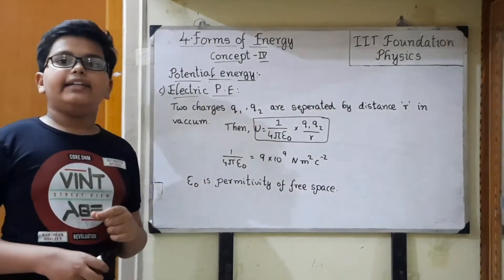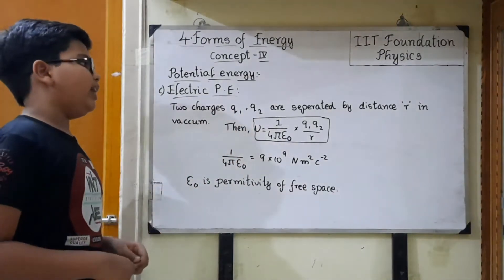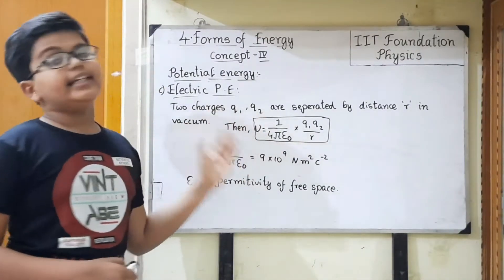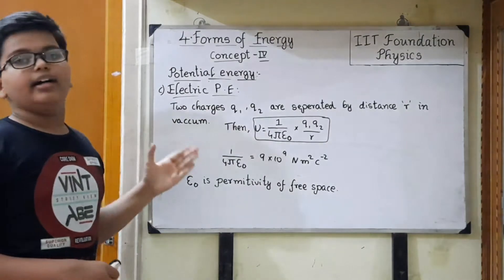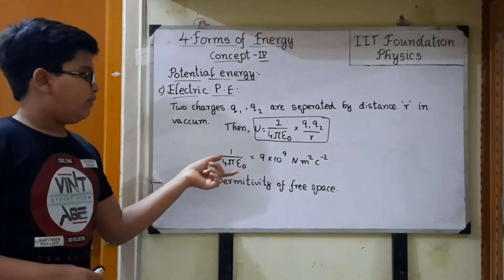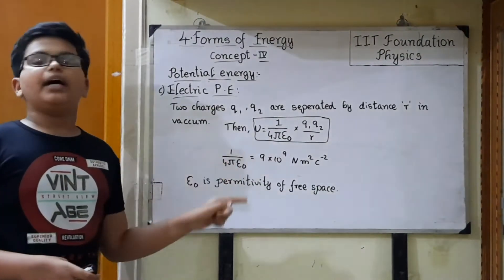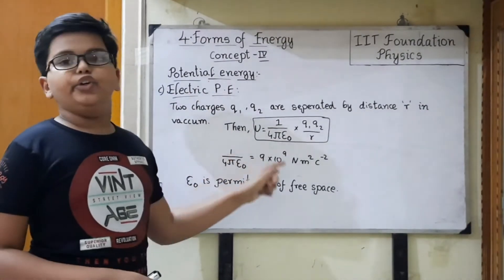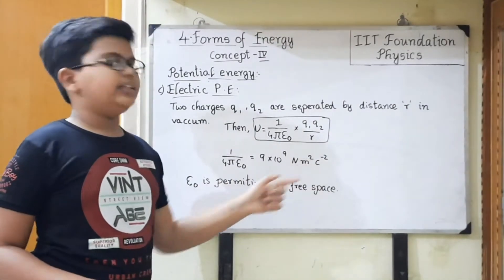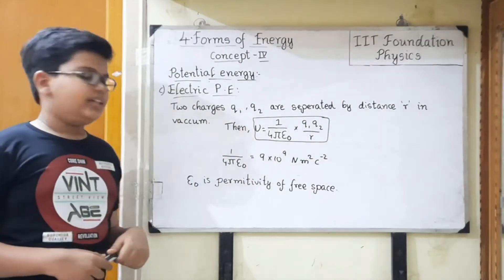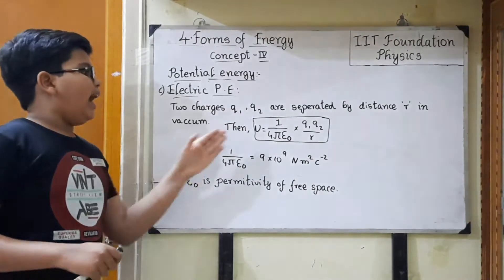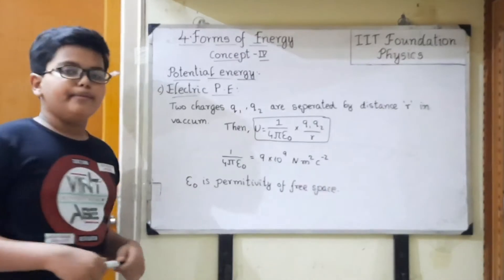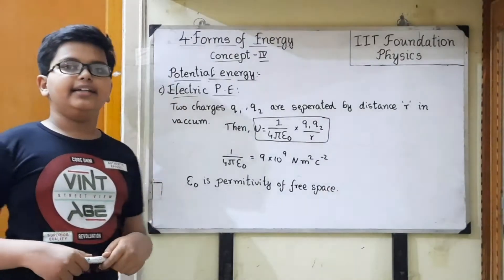The charges are measured in coulombs. And 1 by 4 pi epsilon 0 is a constant just like capital G, the universal gravitational constant. Its value is 9 into 10 to the power 9 newton meter square per coulomb square. Epsilon 0 is the permittivity of free space. This is about electric potential energy.